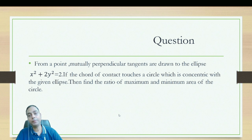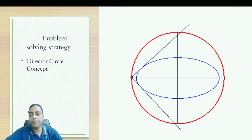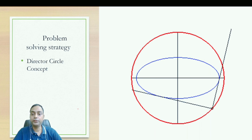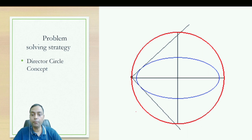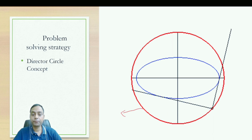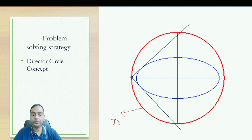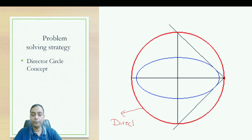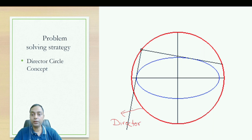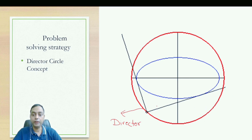Now I am going to give the approach for how to solve this problem. This problem is mainly based on the concept of the director circle. What exactly is the director circle? The director circle is nothing but the locus of the point of intersection of perpendicular tangents. In this diagram, the red circle represents the director circle and the blue line represents the given ellipse.